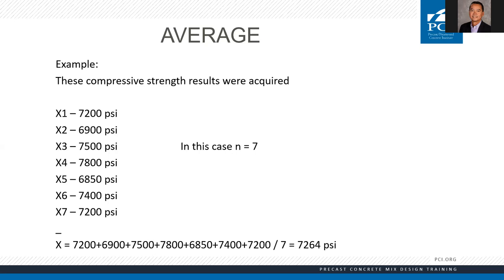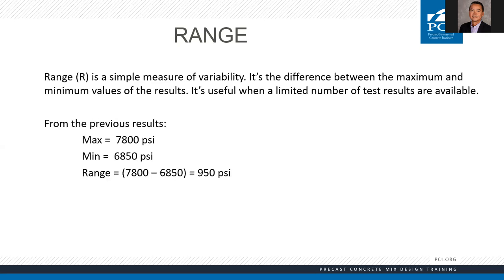How do we calculate range? We take our maximum compressive strength, subtract our minimum compressive strength from those test points, and that gives us a range of 950 PSI for the seven-test sample set.